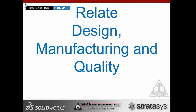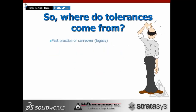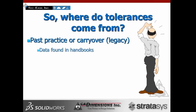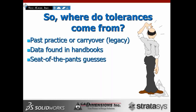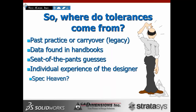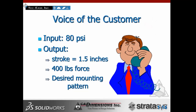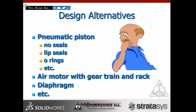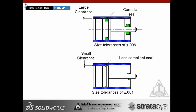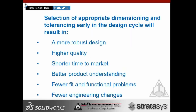We want to relate design, manufacturing, and quality. Where do tolerances come from? Many ask. The answers include: past practice or carryover from legacy parts, data found in handbooks, seat-of-the-pants guesses, individual designer experience, or — ideally — fact-based analysis. At the end of the day, we need to understand the process in order to apply the correct tolerances. It may come from the voice of the customer or from design alternatives. We want to select the appropriate dimensions and tolerances early in the design cycle, which results in a more robust design, higher quality, shorter time to market, better product understanding, and fewer fit and functional problems.